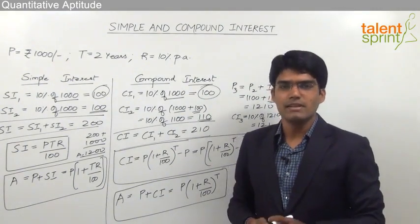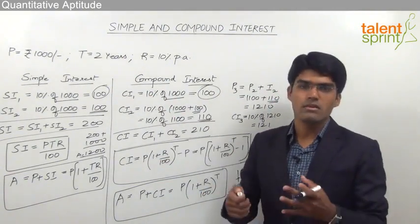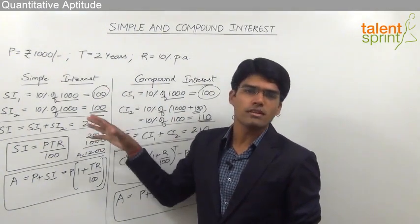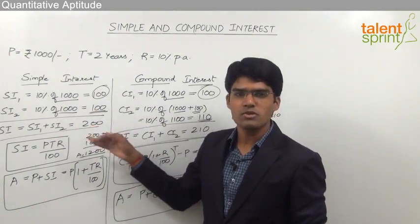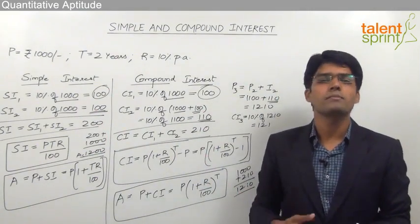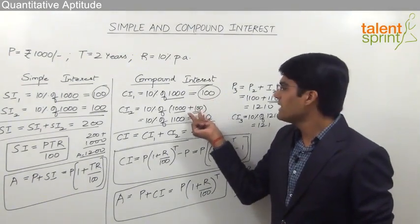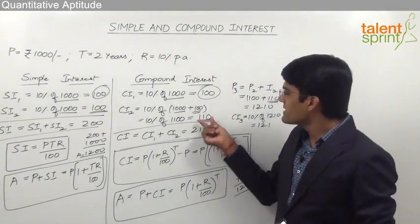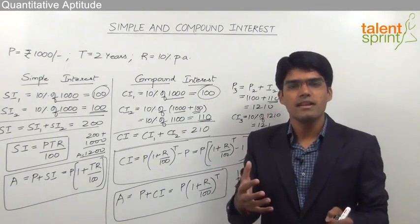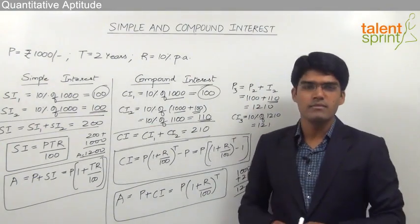Simple interest is called 'simple' because we simply get interest only on the principal amount — there is no complicated calculation. Compound interest is called 'compound' because it is a compounding procedure: every year the interest is calculated and compounded to the principal, and in the next year the interest is again calculated on that new principal. So it is like a compounding procedure where interest keeps mixing with the principal, which is why these two types of interest are named accordingly.